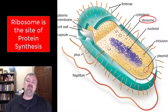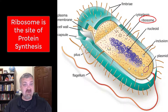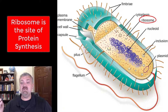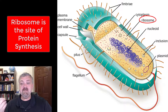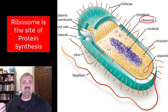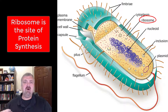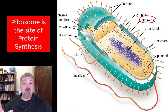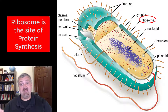Next we have the ribosome. The ribosome is the site of protein synthesis, or the site of translation. Bacterial ribosomes are called 70S ribosomes — S stands for Svedberg units — whereas most human or eukaryote ribosomes are 80S. That's an important target for a lot of antibiotics. So ribosome: think protein synthesis.